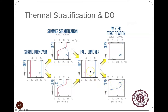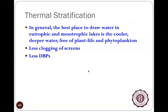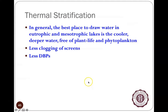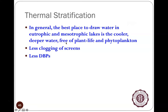In general, we want water treatment plant intakes drawing from the hypolimnion zone in eutrophic lakes — not too close to the bottom to avoid stirring up sediments, but below the photic zone where there's no plankton or plant life. This results in less clogging of intake screens, and when treating with chlorine or ozone, there are fewer substances to interact with, resulting in fewer disinfection byproducts.